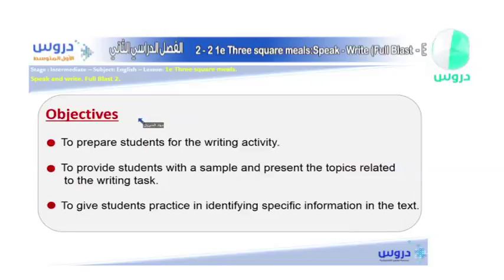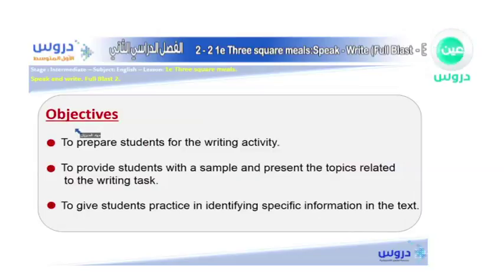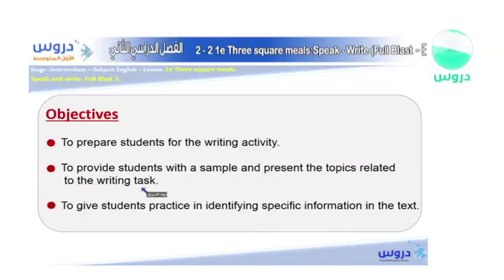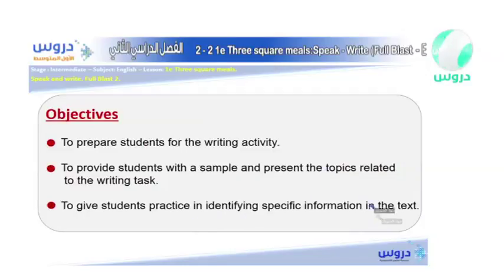First of all, as always, as in every lesson, we must have the lesson objectives, which means the things that we are going to do and to learn. First of all, we're going to prepare students for the writing activity. Then we're going to provide students with a sample and present the topics related to their writing task. Finally, we're going to give students practice in identifying specific information in the text.